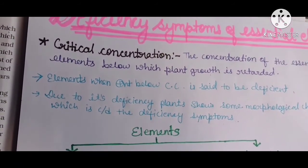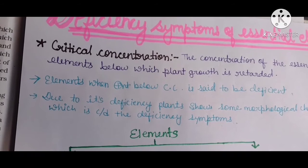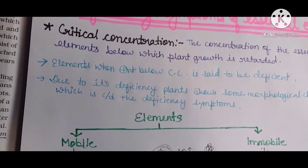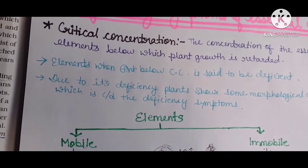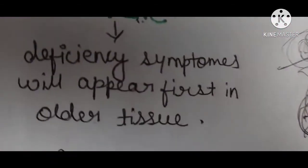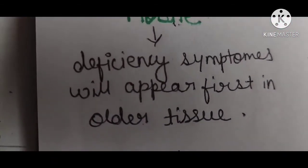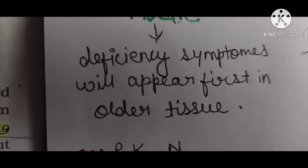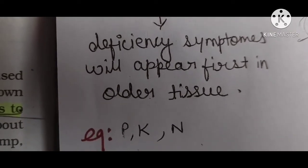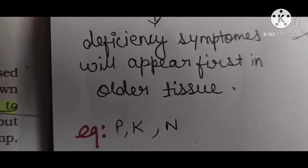Now, where we can see these deficiency symptoms will depend on whether the element is mobile or immobile. If the element is mobile — like potassium, phosphorus, and nitrogen — the deficiency symptoms will appear in older tissue.